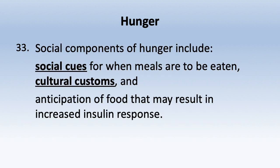Social components of hunger include social cues for when meals are eaten. Many people overeat not because they're genuinely hungry, but because food serves a social connection function. For example, going to restaurants just to be around people. Food is intimately connected with social settings — we tend to eat with others, and meals are associated with social customs.